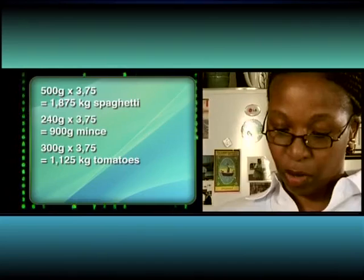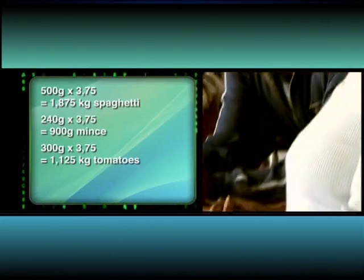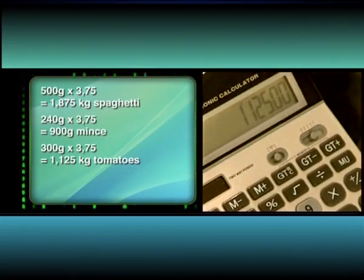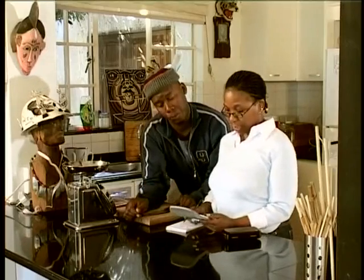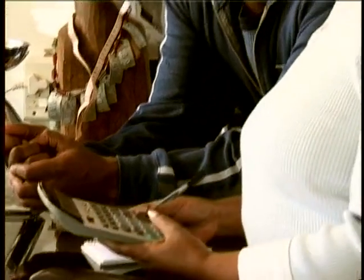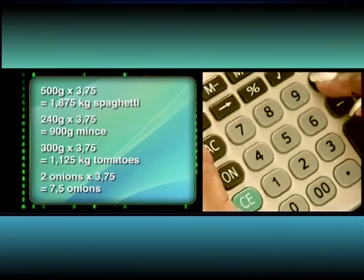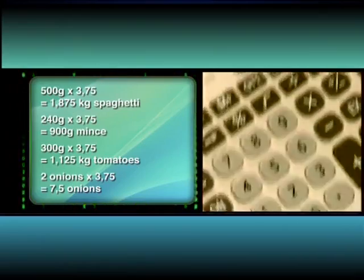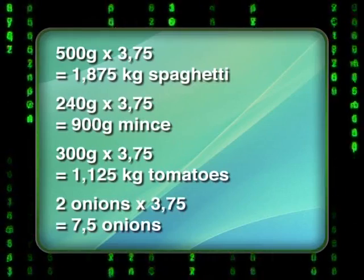Then tomato, 300 grams times 3.75 equals 1,125 grams. Finally, the onions — but here it only says 2 times the fraction gives 7.5. What do you think the 7.5 means? Should Lebuhang use 7 or 8 onions?